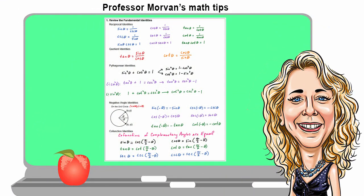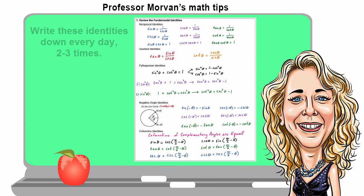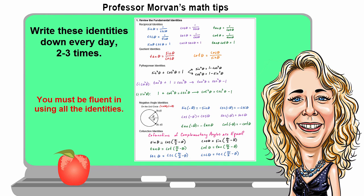And so now we've created a one-page summary of the fundamental identities that you're going to use to simplify expressions and to learn more identities throughout the chapter. One thing I will strongly recommend is that you write these identities down every day two or three times. I know that's a little tedious and not a very fun thing to do, but it will really help you get them down, because one of the most important things you're going to need is to be very fluent in all of these identities.